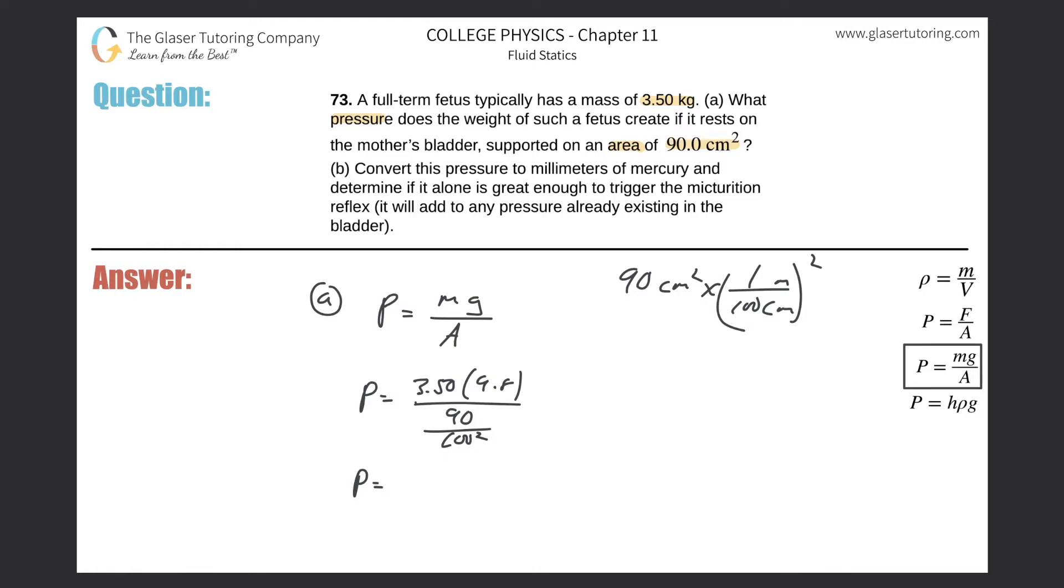3.5 times 9.8, divided by, in parentheses, 90 divided by 100 squared. And we get a value of about 3.81 times 10 to the third Pascals. So that is the pressure.